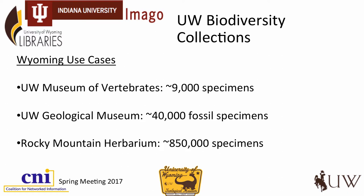At UW, we have the Geological Museum with about 40,000 fossil specimens. We have a vertebrate collection with about 9,000 specimens — more contemporary animals that are taxidermed. Then we have the Rocky Mountain Herbarium, which I believe is the fourth biggest herbaria in the country — we have 850,000 specimens online now. These are mostly two-dimensional images. And just last week we had a meeting with our invertebrate collections manager, and they have a million insect specimens. So we have lots of stuff, but we have nowhere to really put a lot of it.